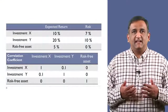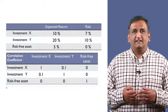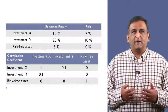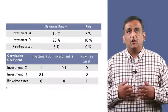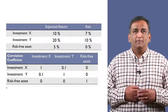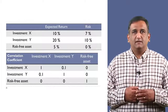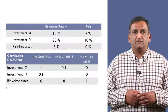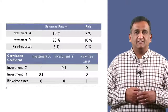Let's go back to our two risky assets X and Y. X has an expected return of 10% and a standard deviation of returns of 7%, and Y has an expected return of 20% and a standard deviation of returns of 10%. The correlation coefficient of their expected returns is 0.10. Now we add a risk-free asset with a return of 5%. By definition, risk-free means no risk, so its standard deviation of returns is zero and its correlation coefficients with both risky assets are zero.